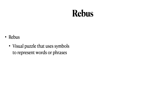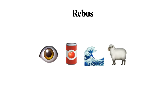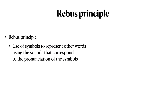First of all, let's define the term Rebus. A Rebus is a visual puzzle that uses symbols to represent words or phrases. The Rebus principle is the use of symbols to represent other words using the sounds that correspond to the pronunciation of the symbols.